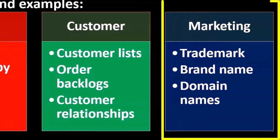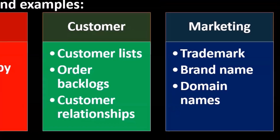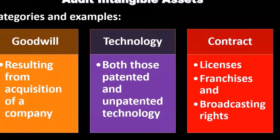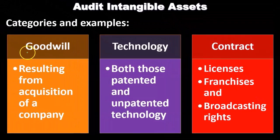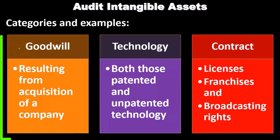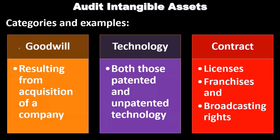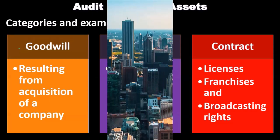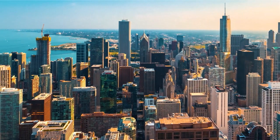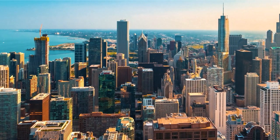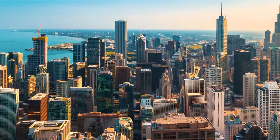Things like trademark brand names and domain names are going to be types of things related to marketing that are intangible types of assets. More categories include things like goodwill — goodwill resulting from the acquisition of a company. If we acquire a company, there are a couple of different ways we could do so.